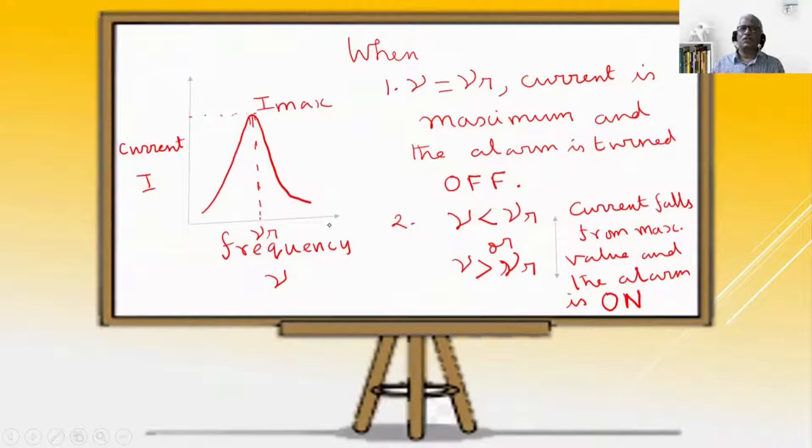Now, we can understand the variation of current with frequency from this graph. The current in the LCR circuit at resonance is plotted against frequency. When ν equals νr, that is frequency equals resonance frequency, current is maximum and the alarm is turned off. When ν is less than νr, current falls from maximum, or when ν is greater than νr, current falls from maximum value and the alarm is turned on. I hope you understood about the working of metal detector.